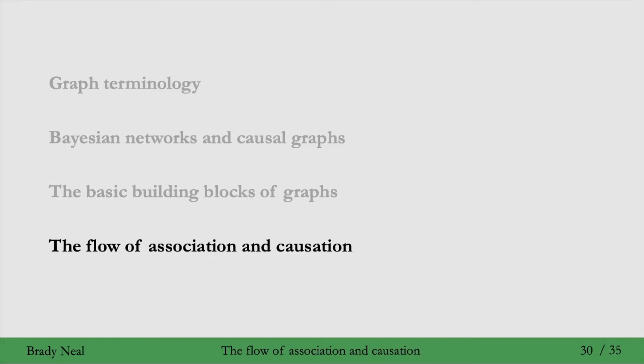And that concludes the basic building blocks of graphs. So we saw forks, chains, and immoralities. Those are the main building blocks to build more general graphs. Given those building blocks and how association flows in them, we can now move on to the flow of association and causation in more general graphs.